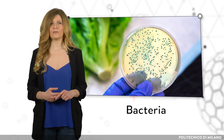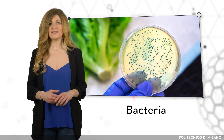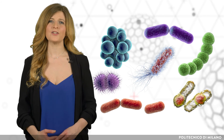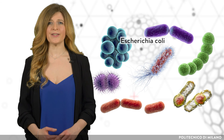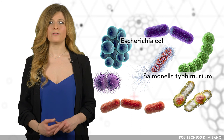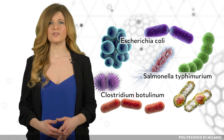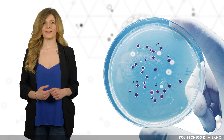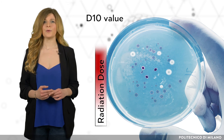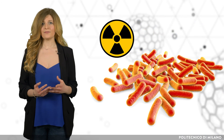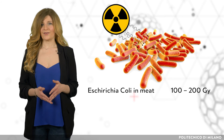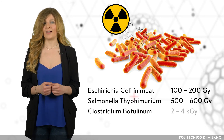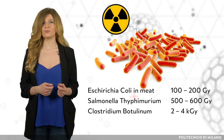Bacteria are generally present in all food and they easily contaminate objects. Their pattern is affected by the nature of the object, its treatment, and storage. There are a large number of bacteria that differ in morphological and physiological characteristics, such as Escherichia coli and Salmonella typhimurium. For non-acidic, low-salt foods, the organisms of concern are the different types of Clostridium botulinum. The sensitivity to radiation is different for each bacterium. To compare the different effects, it is useful to refer to the D10 value — the dose needed to reduce the population by a factor of 10. For example, the D10 value for E. coli in meat is about 100 to 200 grays, while for Salmonella it is about 500 to 600 grays. The D10 values for the various types of Clostridium botulinum that could be present in canned meat are higher, from 2 to 4 kilograys.